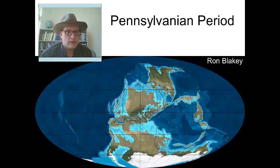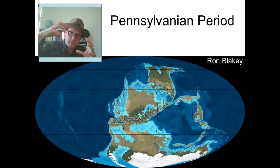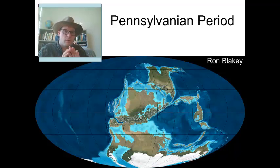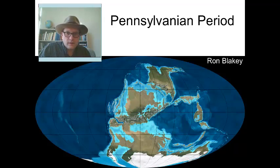The Paradox Basin formed during the Pennsylvanian period, towards the end of the Paleozoic era — the second half of the Carboniferous period. During this time, the continents were assembling into the supercontinent of Pangea. Most of the continents were accumulating on one side, which meant there was a vast ocean wrapping around the entire other side of the globe. North America was rotated so that the equator actually ran through Utah during this time span, making it a very hot place right next to the equator and on the margin of that vast ocean.